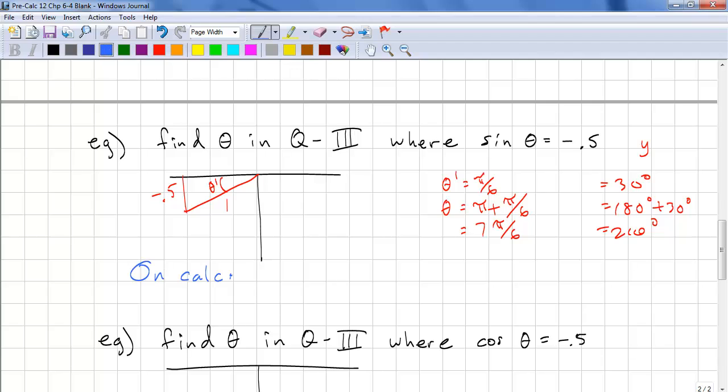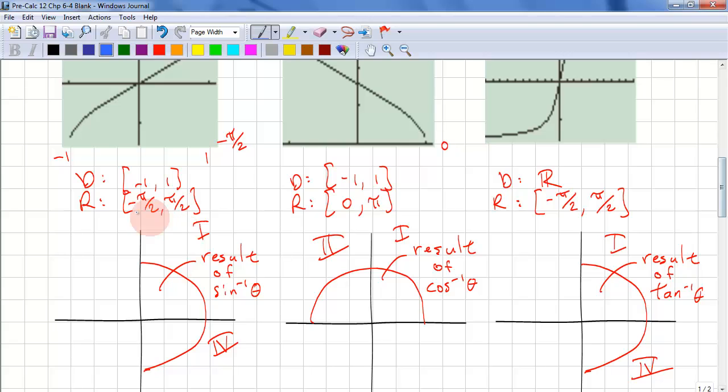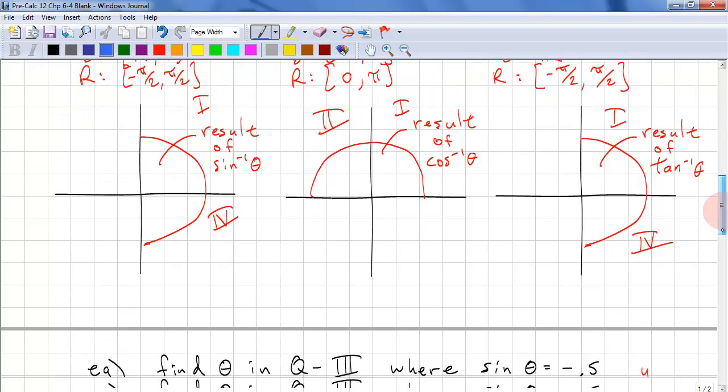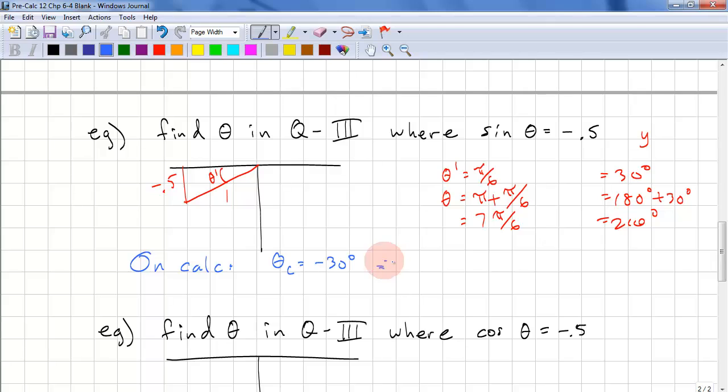On your calculator, you would get, we'll call this theta c calculator. We would get negative 30 degrees. Remember, sine returns negative pi over 2 to pi over 2. This means theta prime equals 30 degrees. And theta equals 180 plus 30 equals 210.